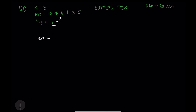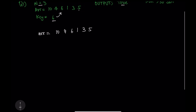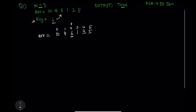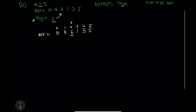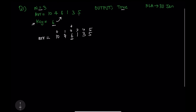We have an array: 10, 4, 6, 1, 3, 5. The question asks us to find a given key which will be provided. I can see indexes 0 through 5 — my value 6 is present at index 2. This question is very easy because you just need to use a for loop and you are done.